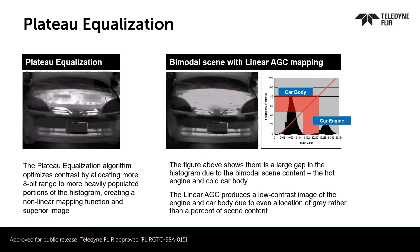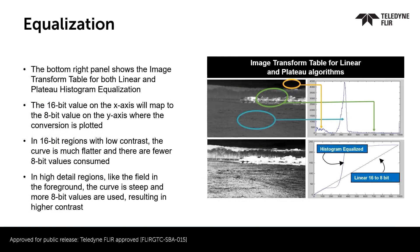The simplest method is to do a linear transformation — take the total span of the data available in the 16-bit space, which could be a few thousand counts, and do a linear transformation to the 8-bit space, cutting out space not used in the 14-bit space. Plateau histogram equalization optimizes contrast and makes it possible to limit how much certain objects contribute to histograms in the 8-bit space. The plateau histogram equalization produces a clearer image than standard linear AGC, and generally produces significantly more contrast by removing data that's not needed.